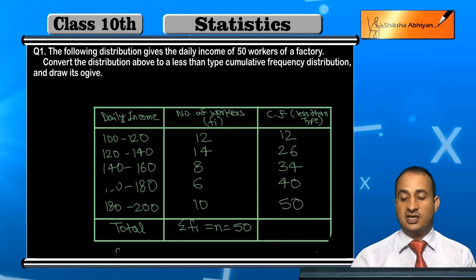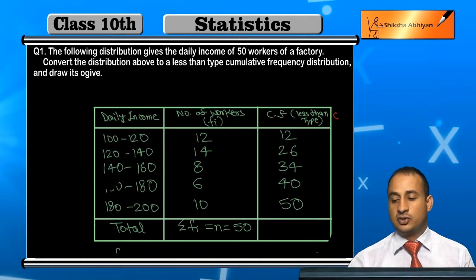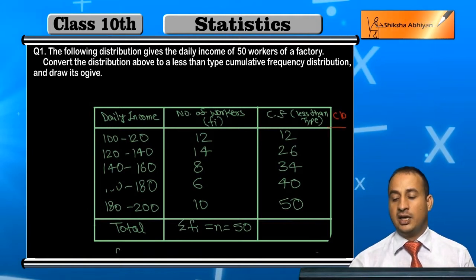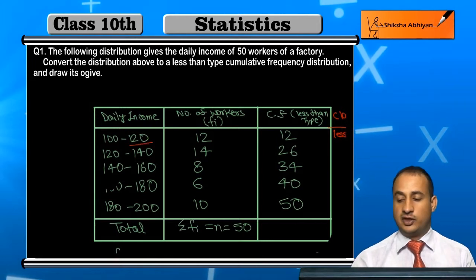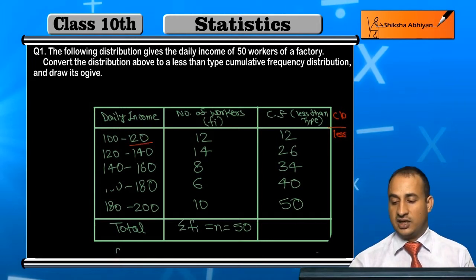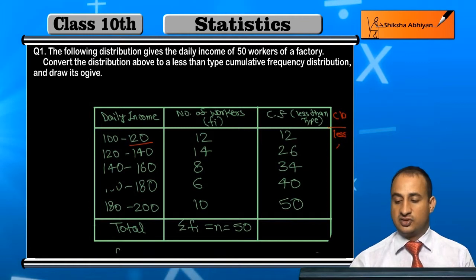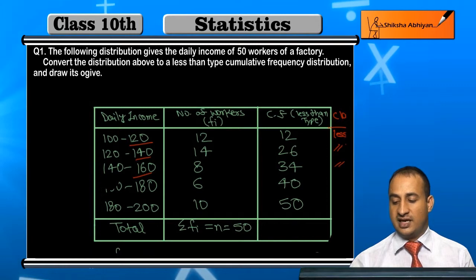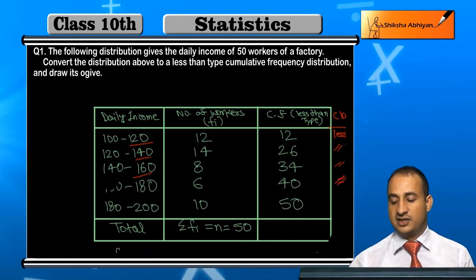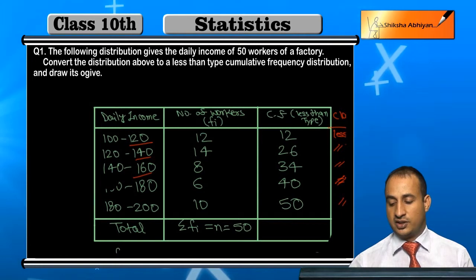Now the classes for less than type will be: less than 120, less than 140, less than 160, less than 180, and less than 200.